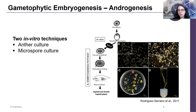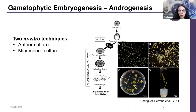Remember that we started with a haploid cell type. Therefore, the plantlets that we regenerated are also haploid, unless a spontaneous chromosome duplication has happened. If that's not the case, then a chemical treatment will be applied, and finally double-haploid plants will have to be selected.